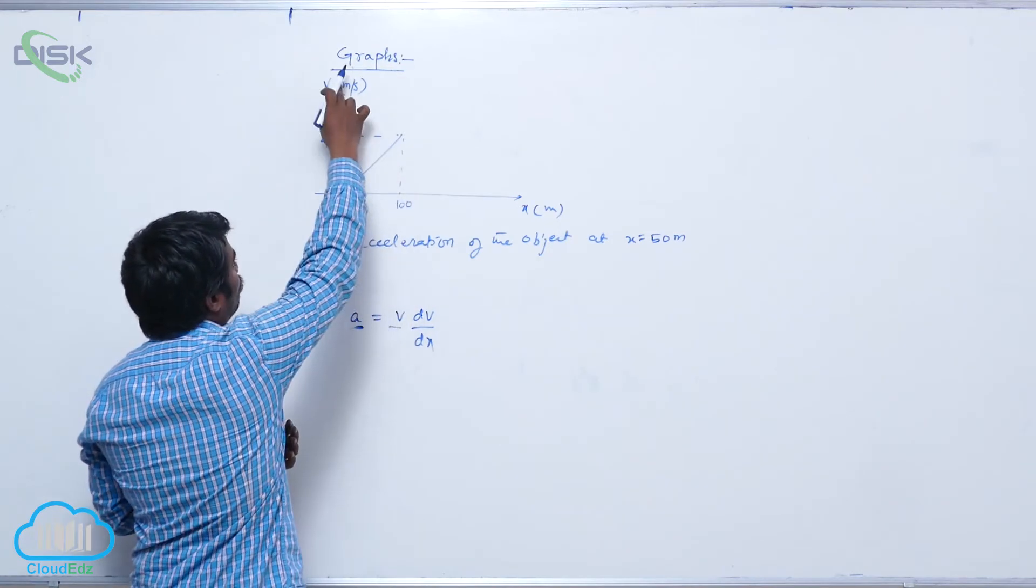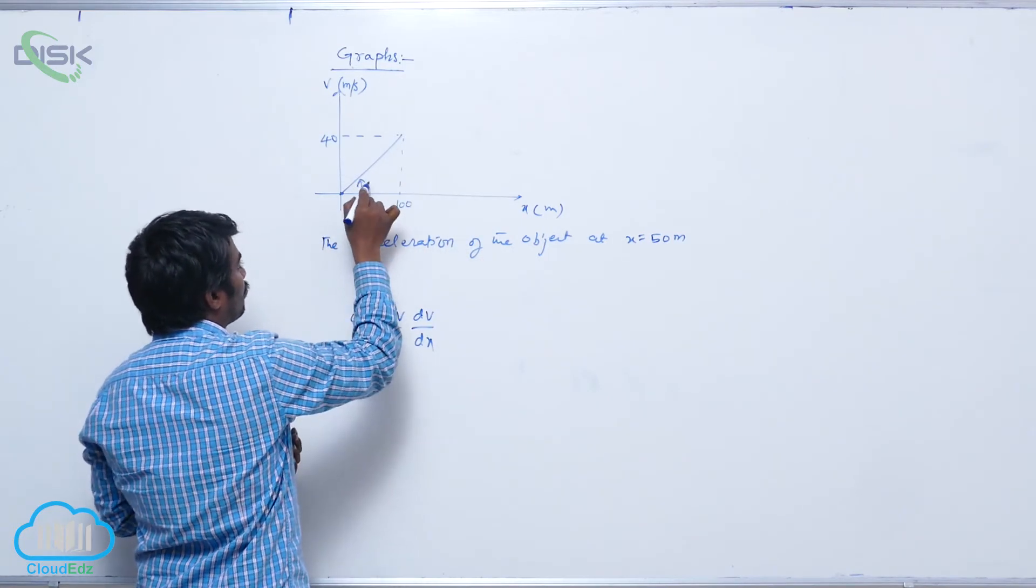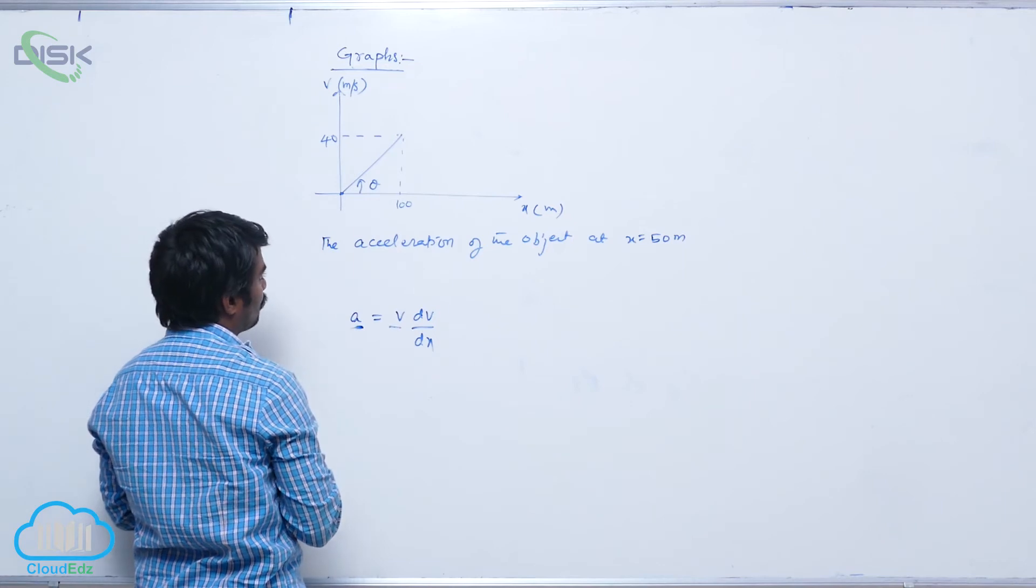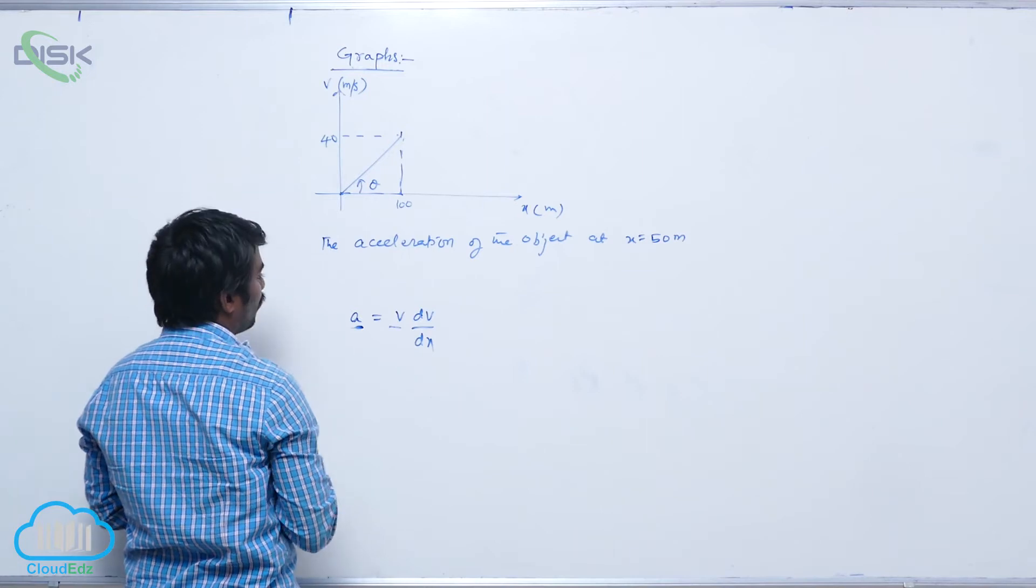If this is the y axis and this is the x axis, then y equals mx. This theta is less than 90 degrees, so the slope is positive. That slope equals tan theta, which is opposite by adjacent, so 40 by 100.